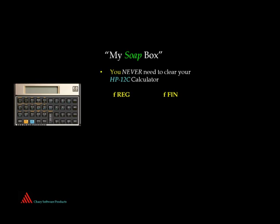The same with F-FIN. The only thing F-FIN does is take the five numbers that are in the five financial registers and put zeros in them. Absolutely not required to do, especially if you know how to run the financial registers. So for both of those, don't use them if you can. Try to use your 12C without using the F-REG and the F-FIN. They are not needed, they are useless.